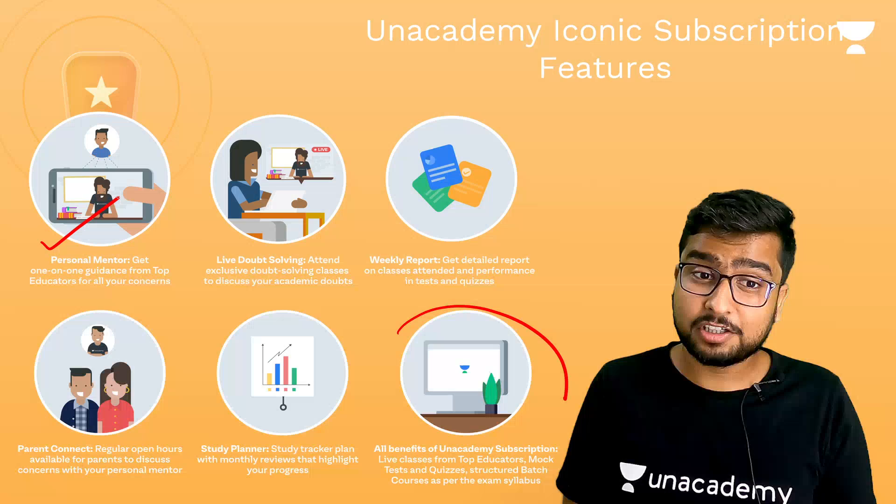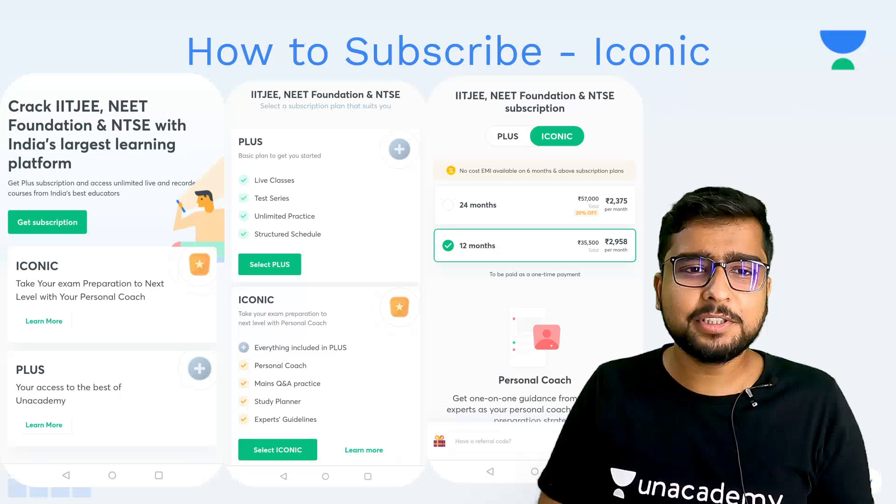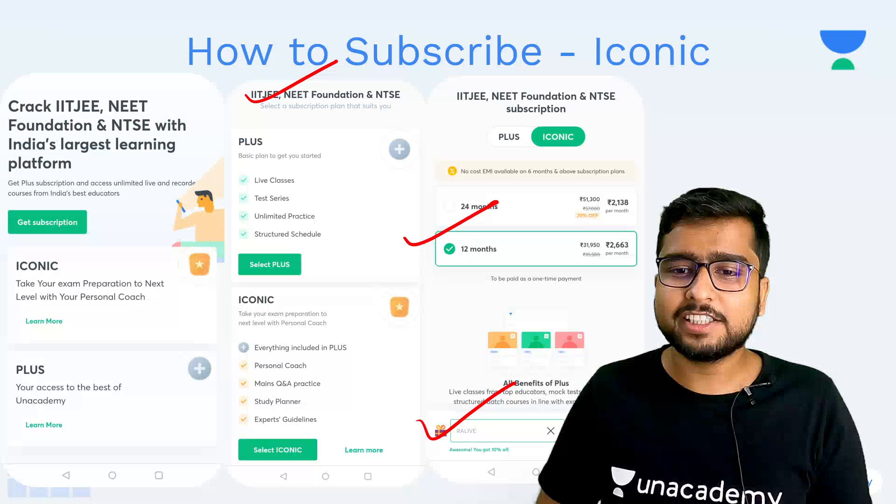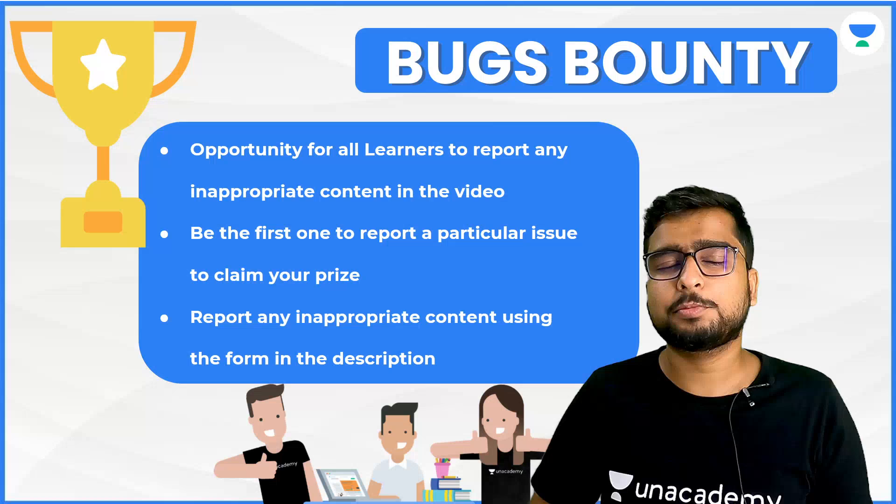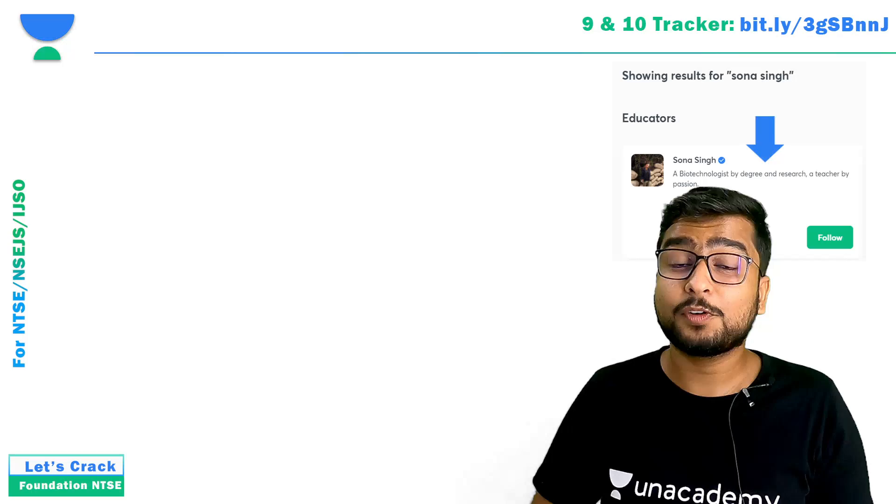You can check our Iconic products as well. Just Plus has all features but it also has got a personal mentor, live doubt solving, weekly reports, paid and connect sessions and a lot more. Same category, mahinah, code, you get an instant 10 percent discount. If you find something inappropriate do let us know, we'll try to take care of that as well.